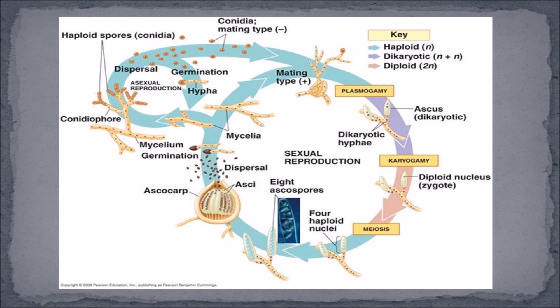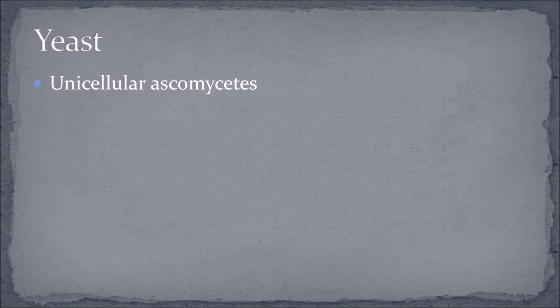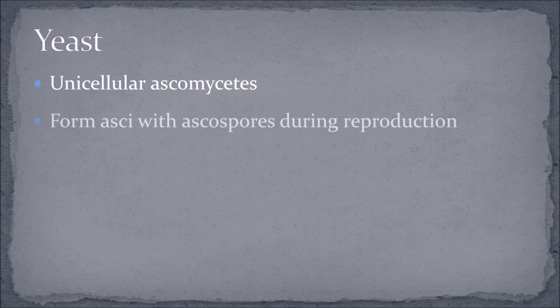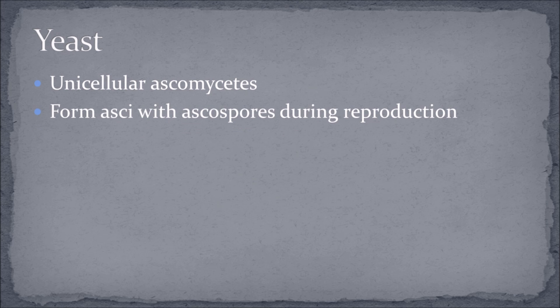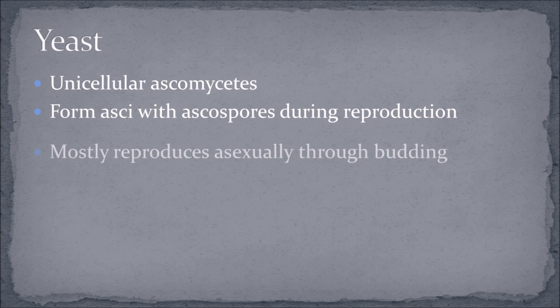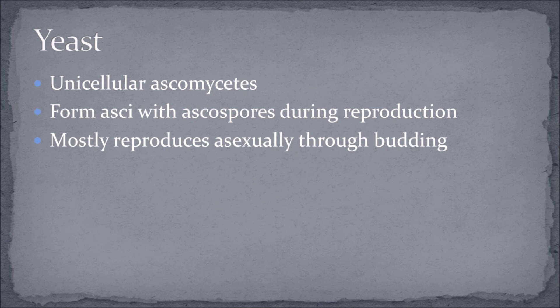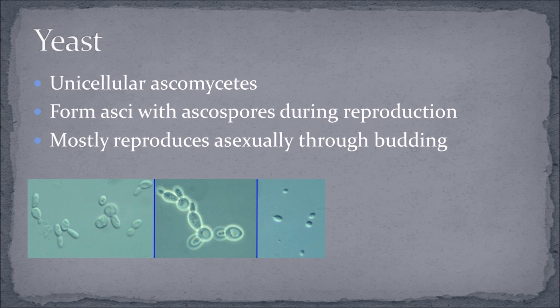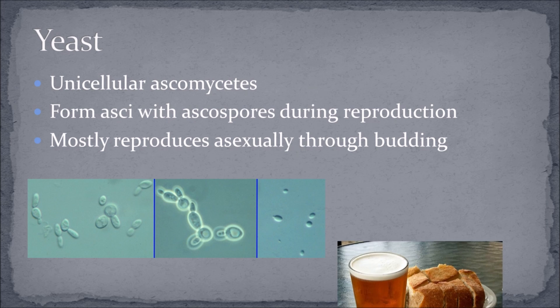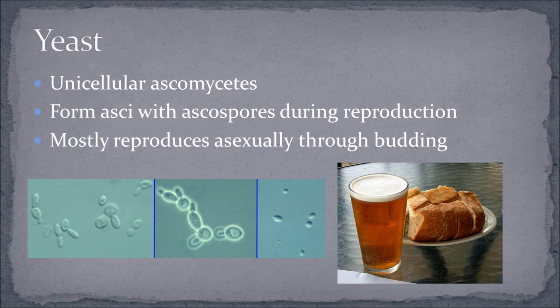Yeasts are unicellular ascomycetes, classified as such because they form asci with ascospores during reproduction. Yeast mostly reproduces asexually through a process called budding, which is the formation of a smaller cell from a larger one. Dry granules contain ascospores which become active in a moist environment. Nowadays, we use yeast to bake bread, make beer, and even for genetic engineering and research.